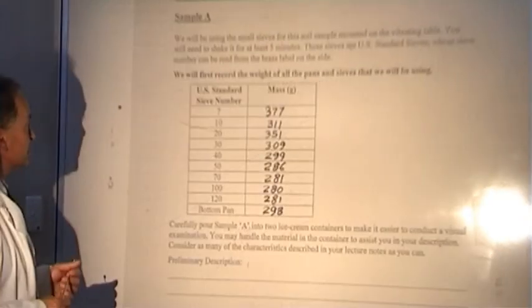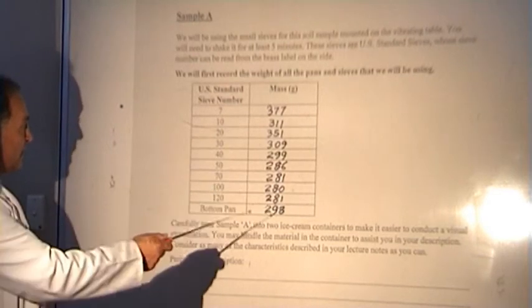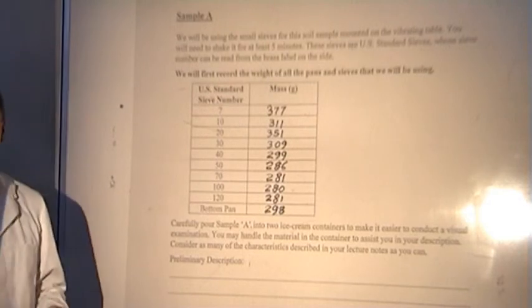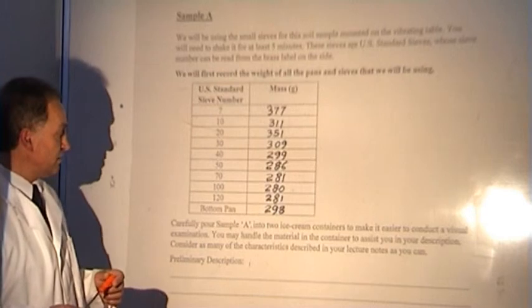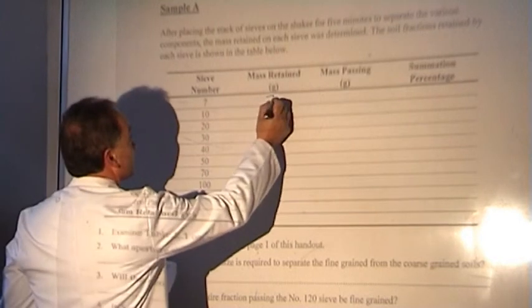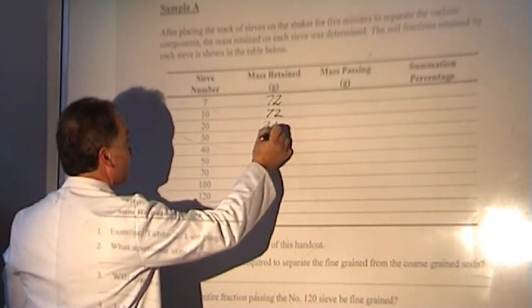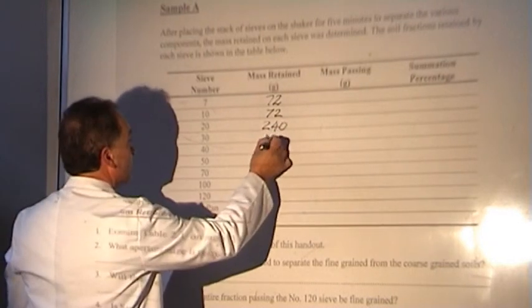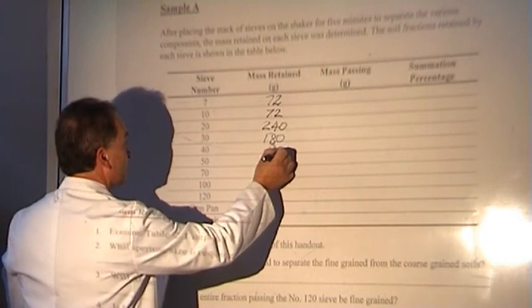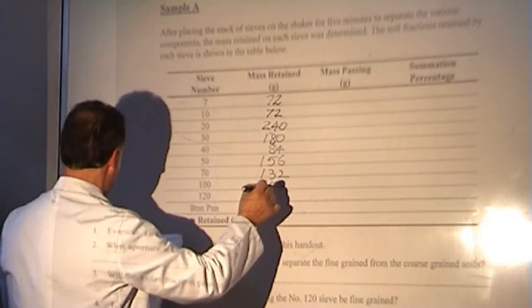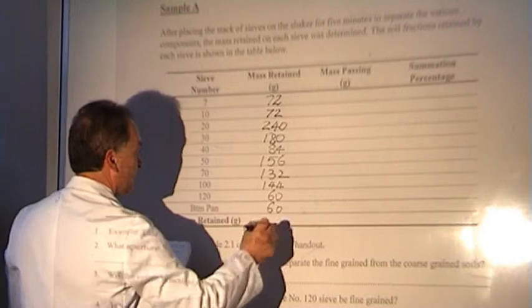The mass of the sieves found in the laboratory have been added to a table — the mass of sieves 7, 10, 20 down to 120, and the mass of the pan. Subtracting sieve mass from total mass retained gives the mass of soil alone: 72 g in the number 7 sieve, 72 g in the number 10 sieve, 240 g in the next, 180 g in the number 30 sieve, 84 g in the number 40, 156 g in the number 50 sieve, 132 g, 144 g, 60 g, and 60 g caught in the bottom pan.